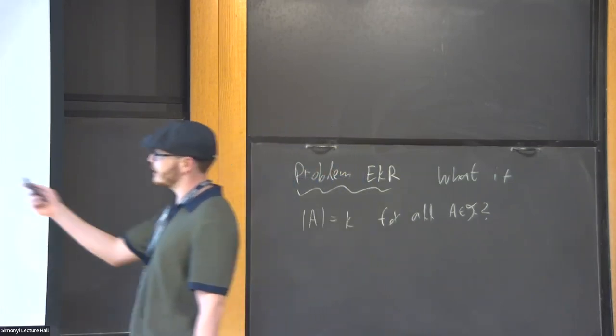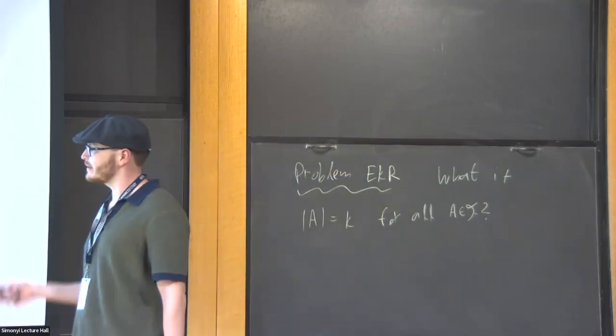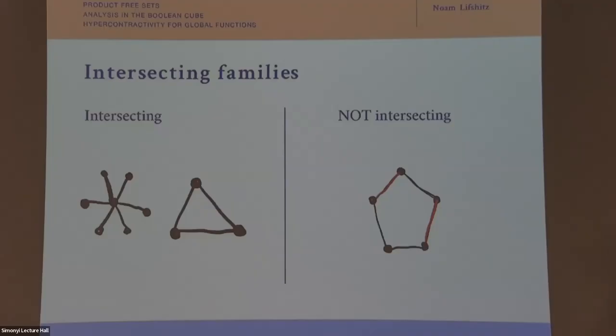Here is the case where k equals 2 — these are just graphs — and this is a non-intersecting graph, and these are the intersecting graphs.